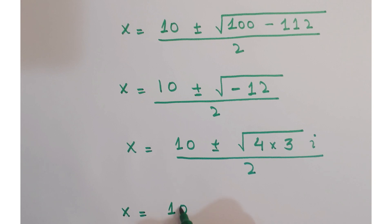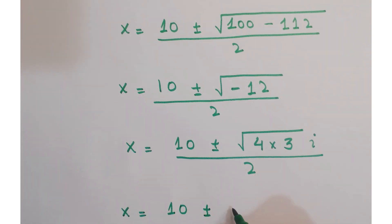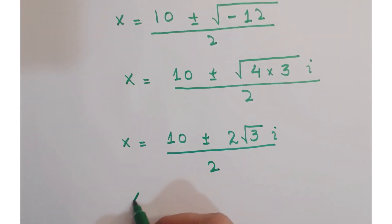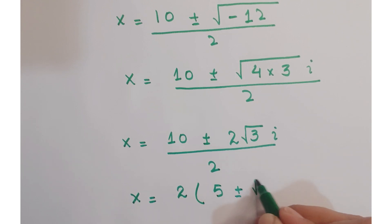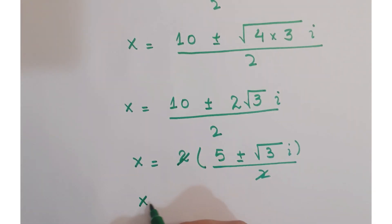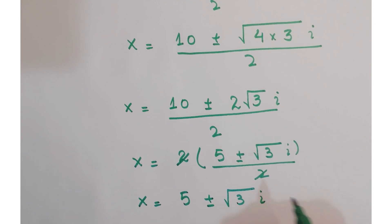Here we have 10 plus minus, this 4 is the perfect square of 2. Taking out 2 common we have 5 plus minus under root 3i upon 2. This 2 gets cancelled. So x equals 5 plus minus under root 3i.